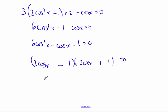And so cosine x is equal to 1 over 2, and cosine x is equal to minus 1 over 3.